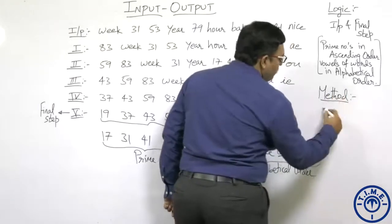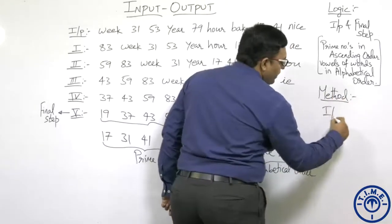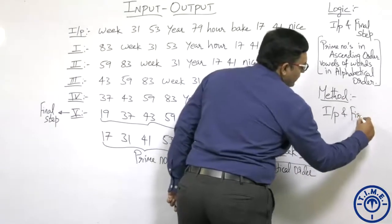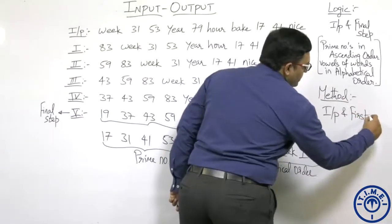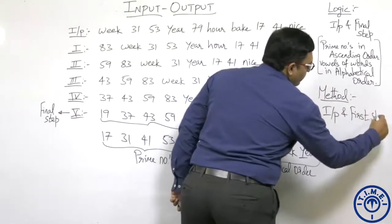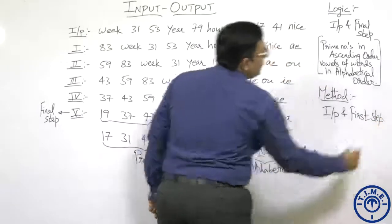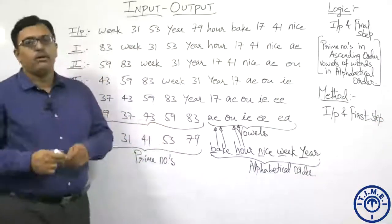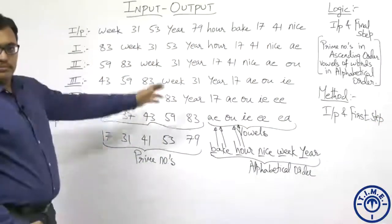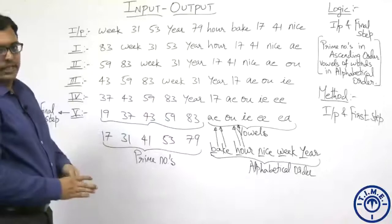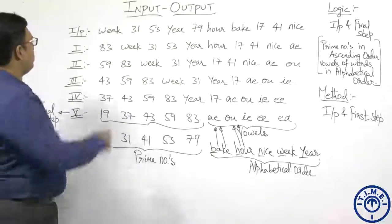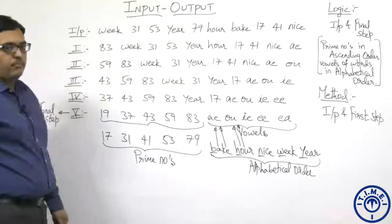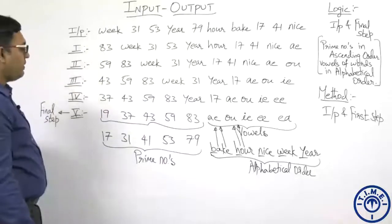For the method, we take input and the first step. Taking input and first step, we check the method in which it is followed.